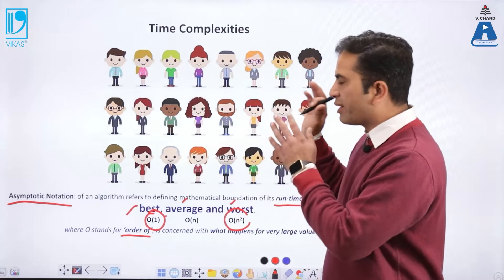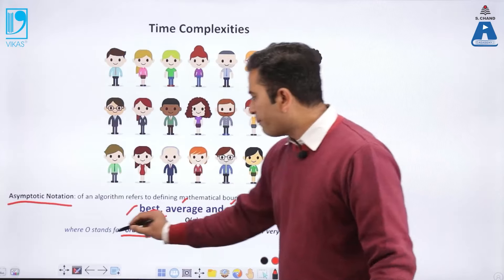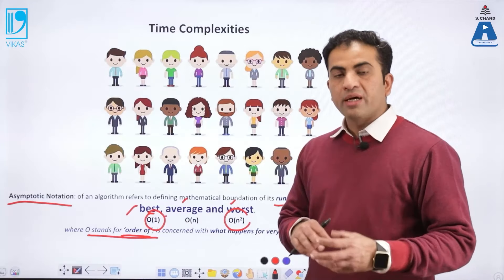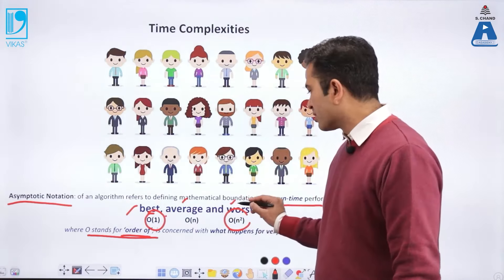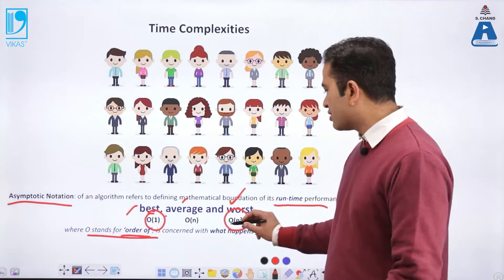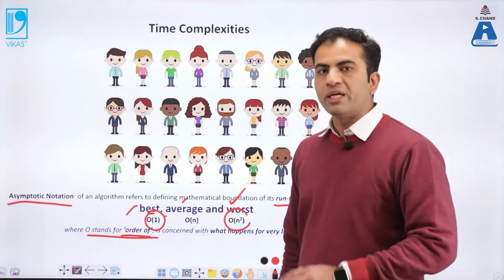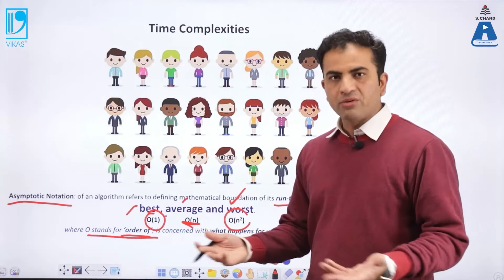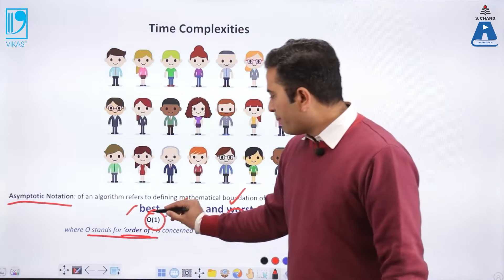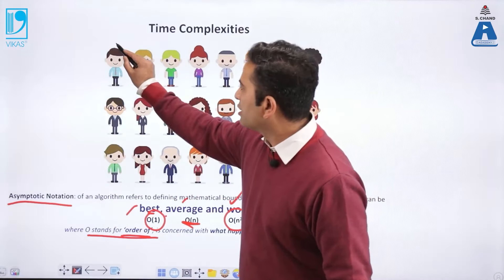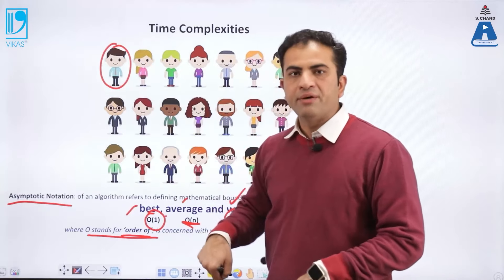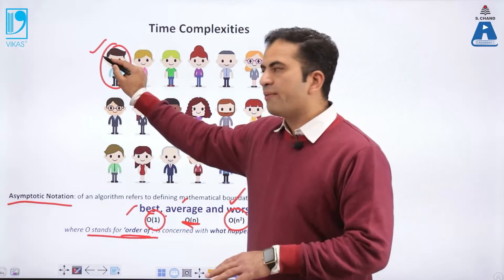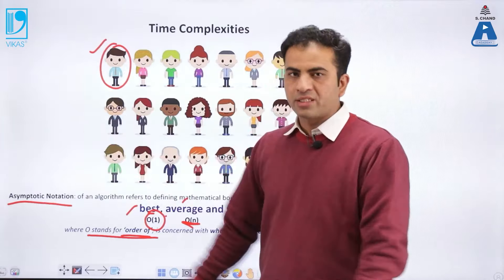When we talk about the efficiency of any algorithm, we must focus on the worst case. If the worst case is O(n²), the time complexity is very hard. If the worst case is O(n), it is good. If the best case is O(1), that means I asked the very first person and they already had the pen — I didn't need to ask anyone else. That is called the best case.